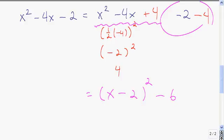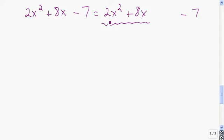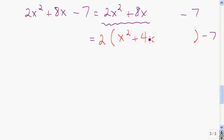Once you get the hang of it, it's not such a tough technique. The last example I'm going to show you is what to do when the leading coefficient of x squared is not 1. Let's complete the square in x here. As before, take the constant term and put it off to the side. Then go to the first two terms and factor out the coefficient of x squared. Factoring 2 out of 2x squared plus 8x leaves 2 on the outside, with x squared plus 4x inside, leaving a big space. Then there's the minus 7.